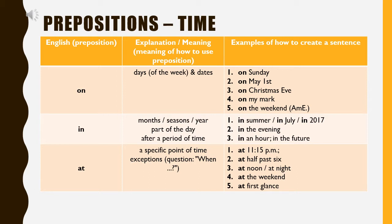Continuing with 'in' for time: in the evening, in an hour, in the future. The word 'at' is used for a specific point of time — for example: at 11:15 PM, at half past six, at noon, at night, at the weekend, at first glance.